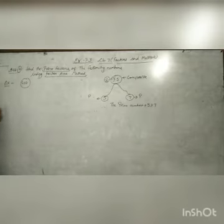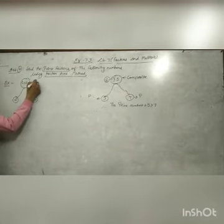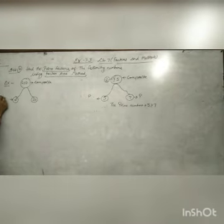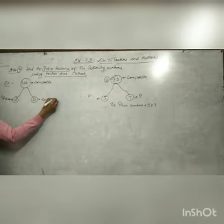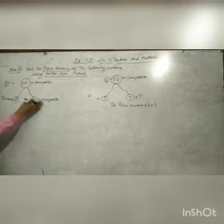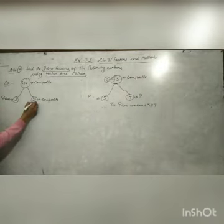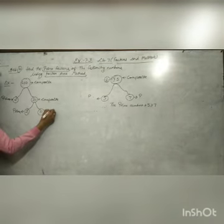Now let's take another example: number 20. We find its prime factors using the factor tree. First, 20 equals 2 multiplied by 10. The number 2 is a prime number. But 10 is a composite number, so we continue breaking it down.